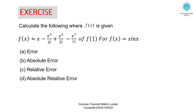Exercise: Calculate the following where f of x is given. f of x is approximately equal to x minus x cubed over 3 factorial, plus x to the power 5 over 5 factorial, minus x to the power 7 over 7 factorial. Calculate f of 1, for f of x equal to sin x. Calculate the error, absolute error, relative error, and absolute relative error.